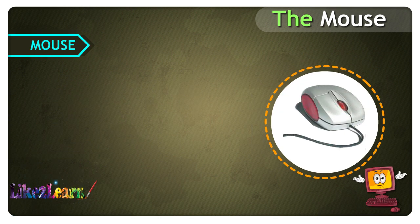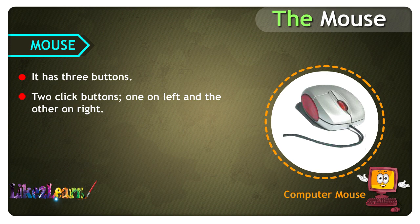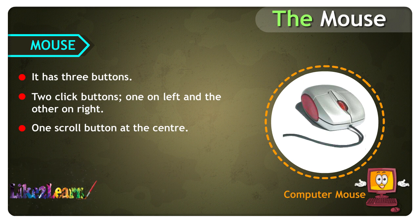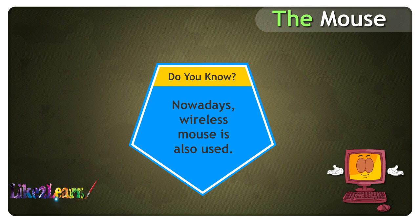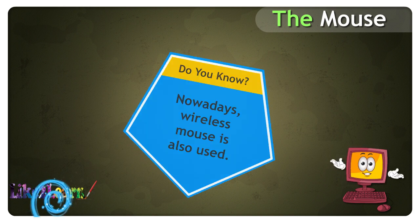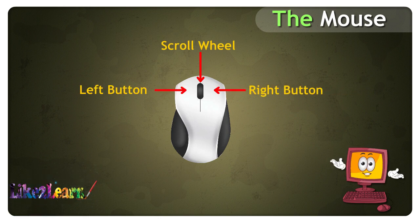The computer mouse has three buttons: two click buttons, one on the left and the other on the right, and one scroll button at the center. It has a tail that is fixed to the CPU. Nowadays, wireless mouse is also used. The mouse has a scroll wheel, a left button, and a right button.